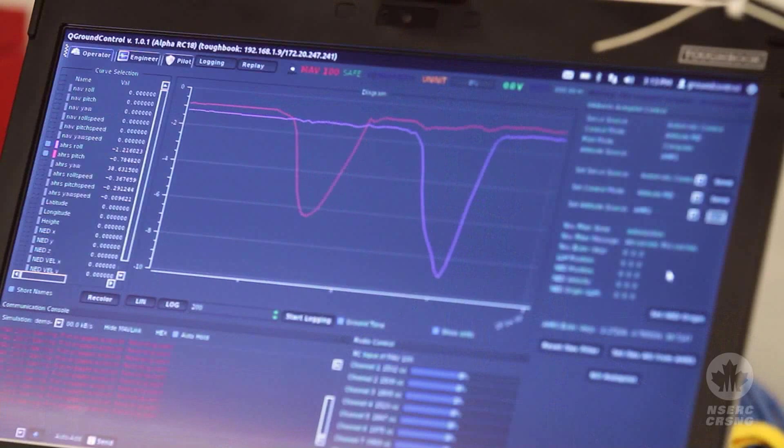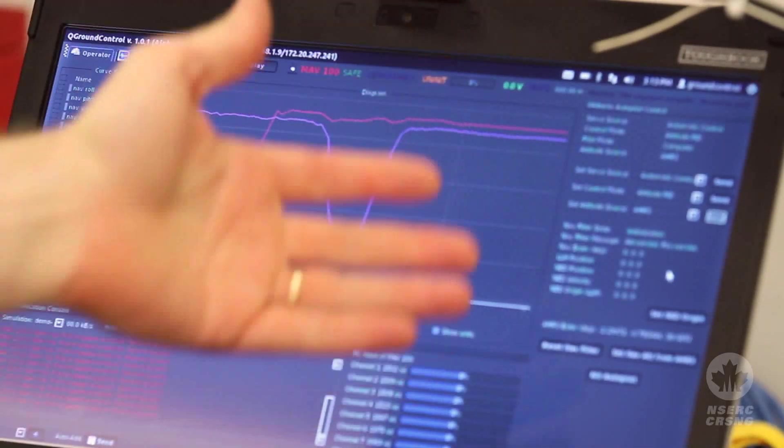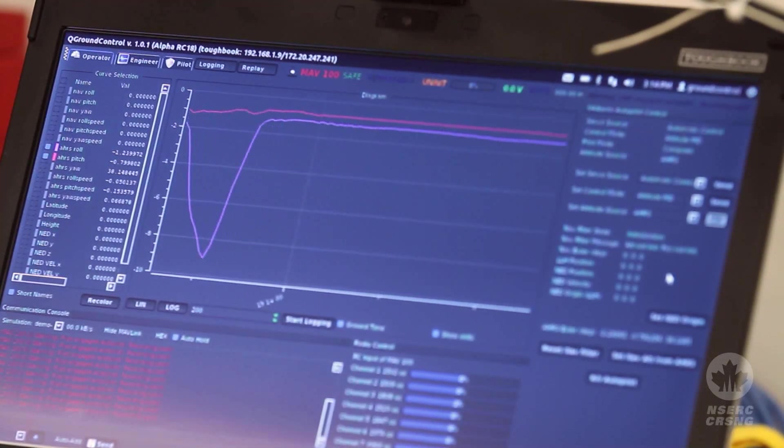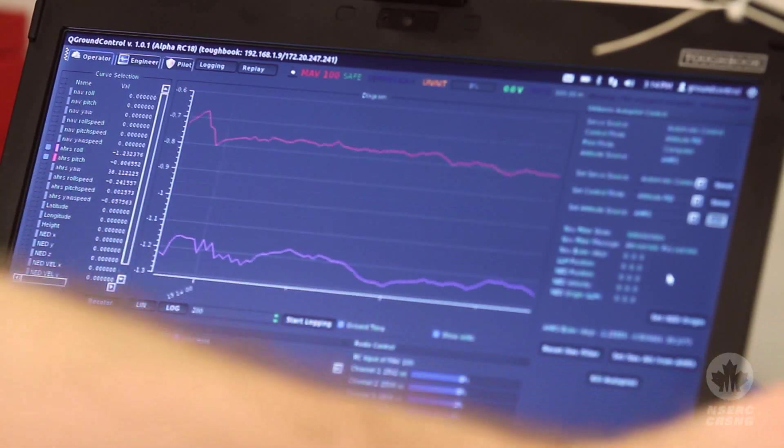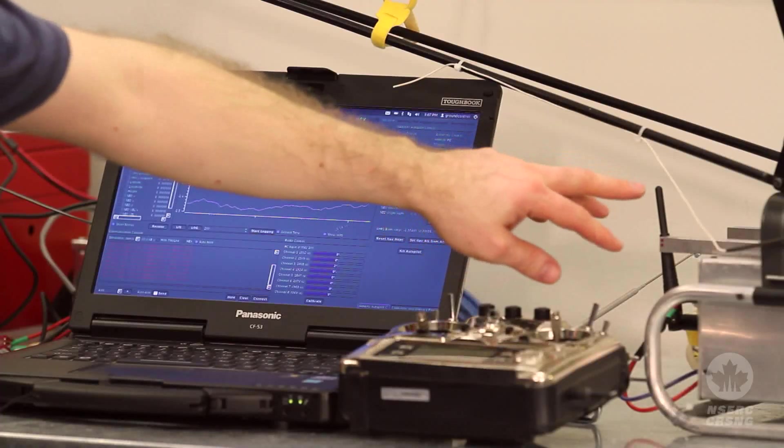What we're seeing are trajectories of the so-called roll and pitch angles. So you can see the trajectories being logged here on the screen.